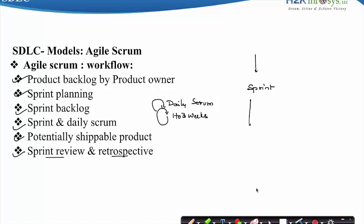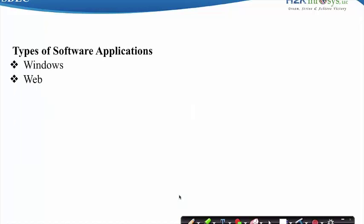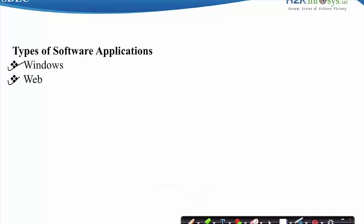Software applications can be of two types. The first is Windows-based, which are standalone applications — for example, Microsoft Office, Notepad, the Calculator Program, MS Paint, etc. The second is web-based applications, which are software that require the system to be on a network like the internet — for example, Google.com, eBay.com, and so on. These are the two types of software applications.